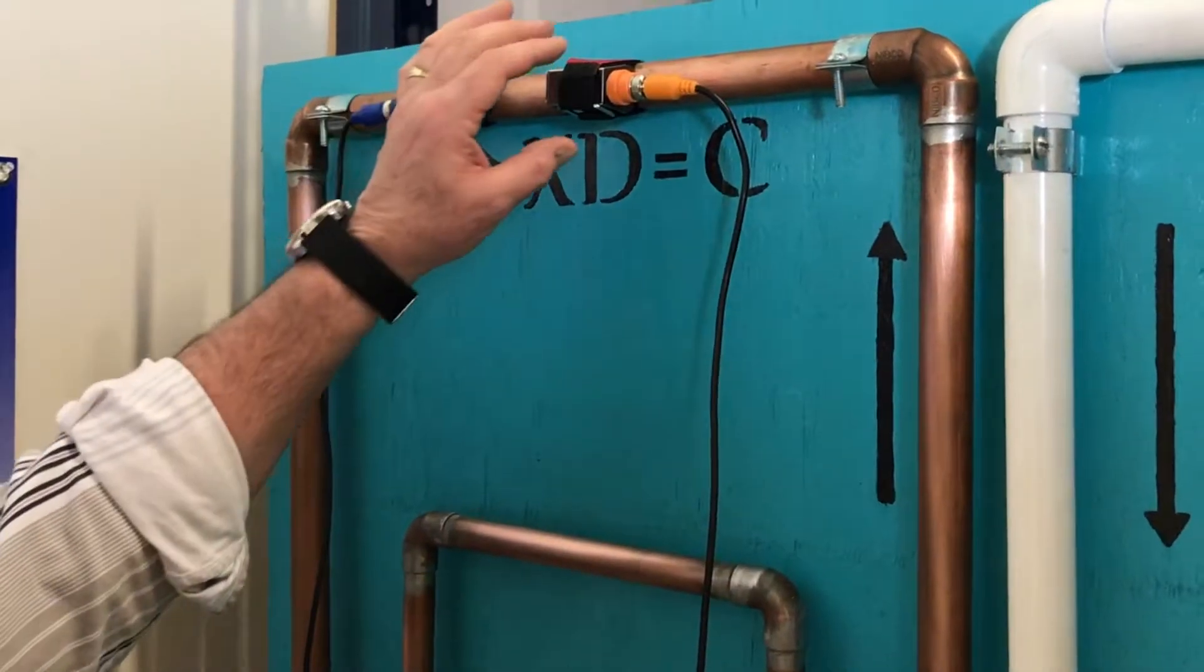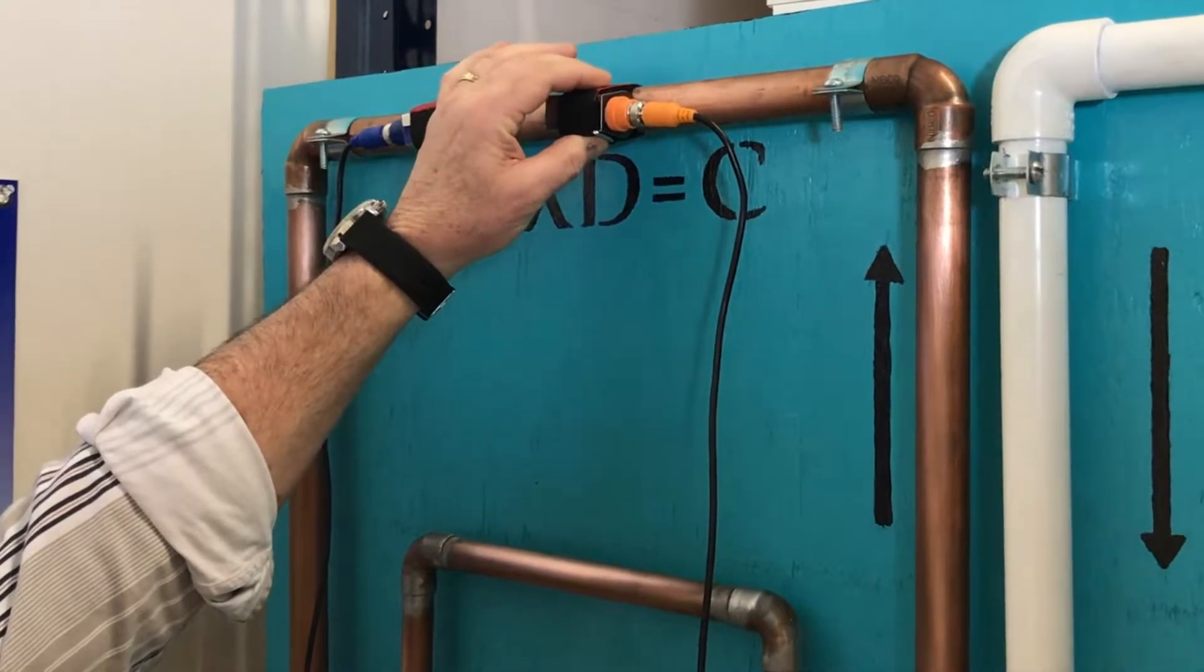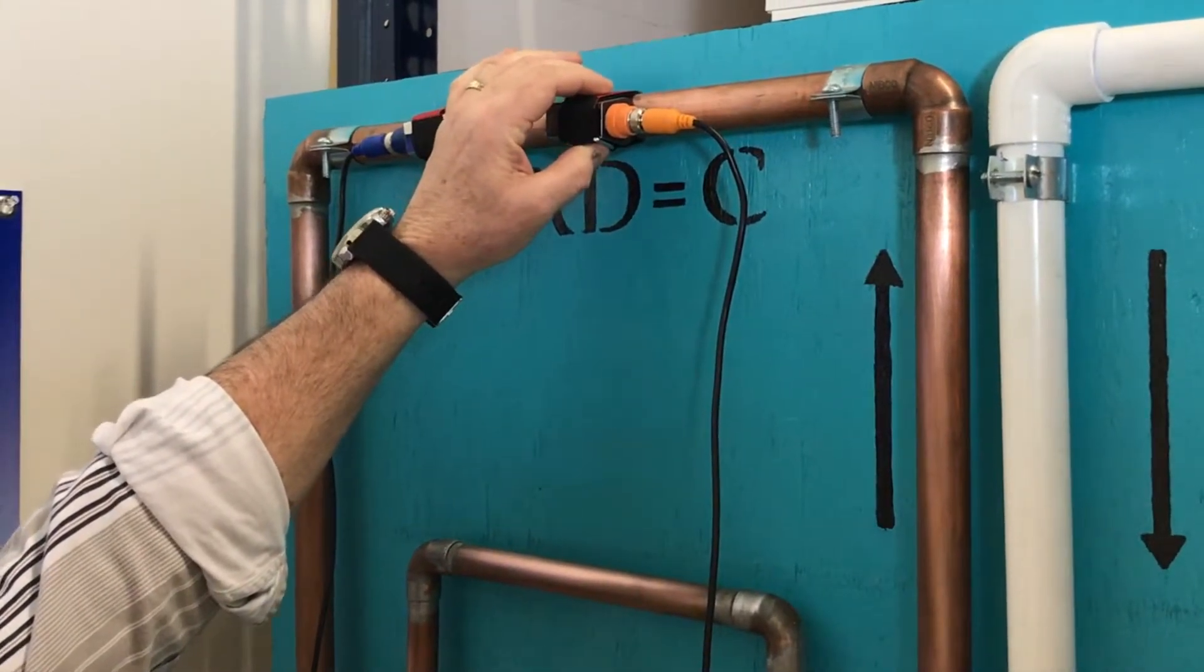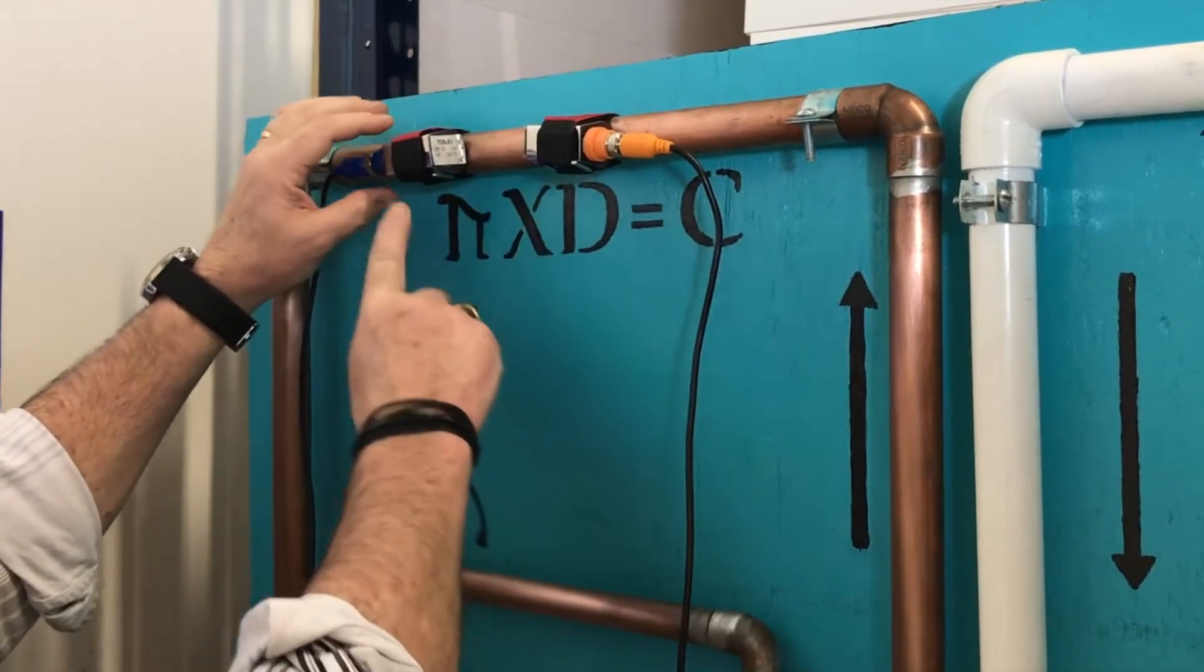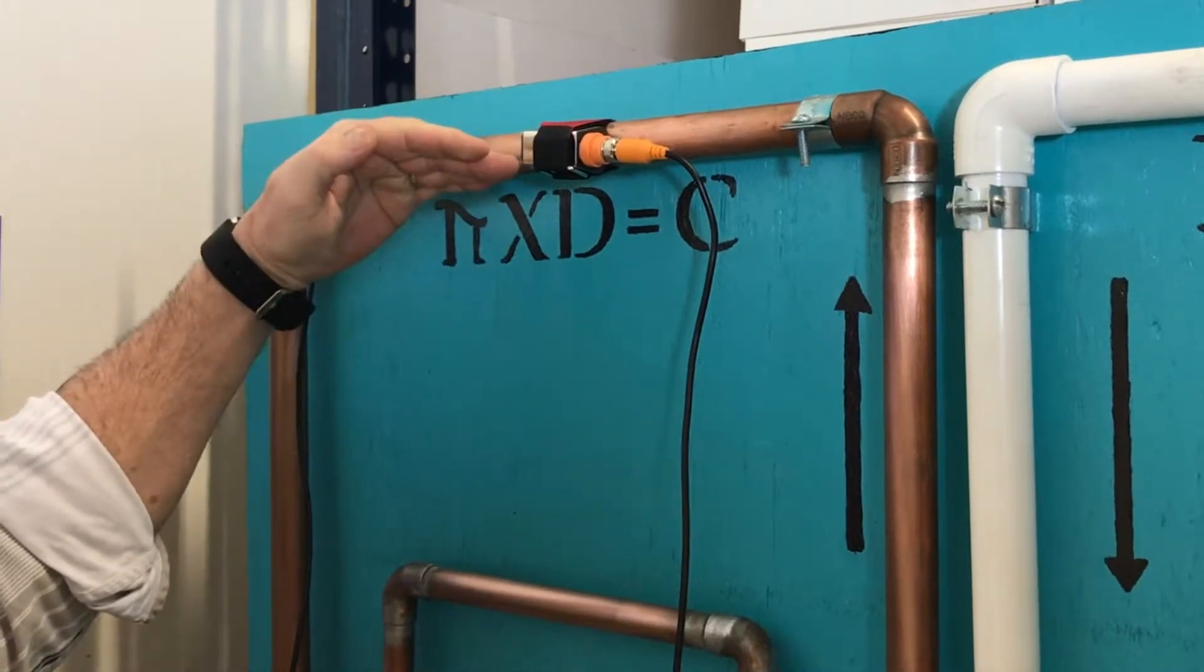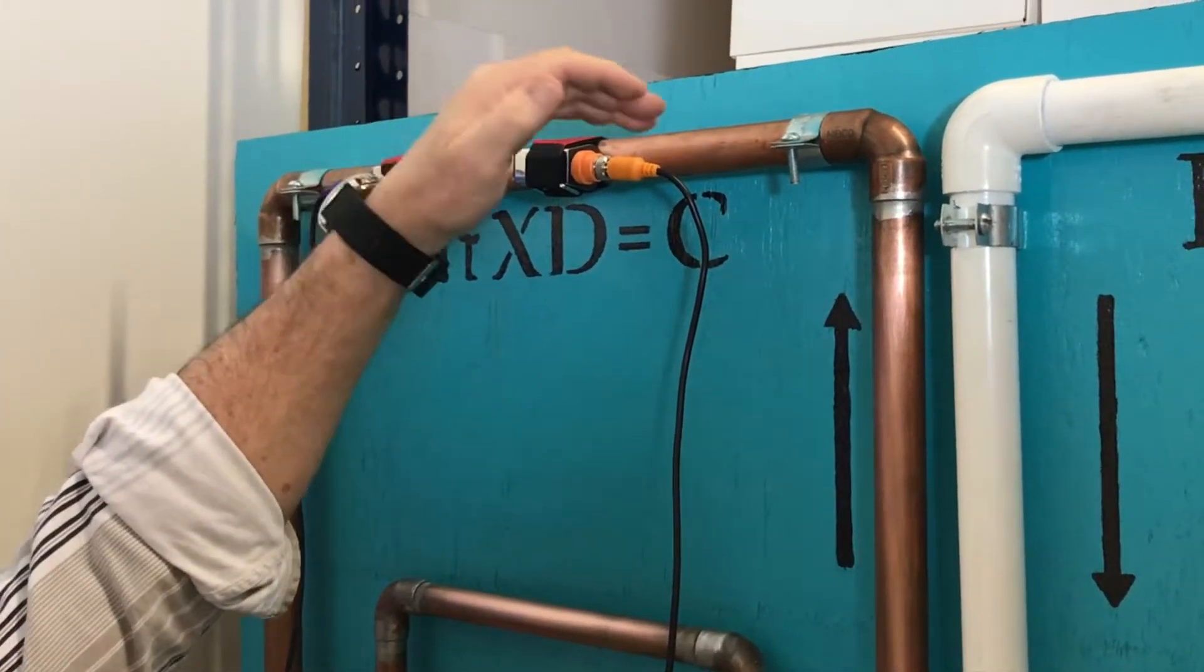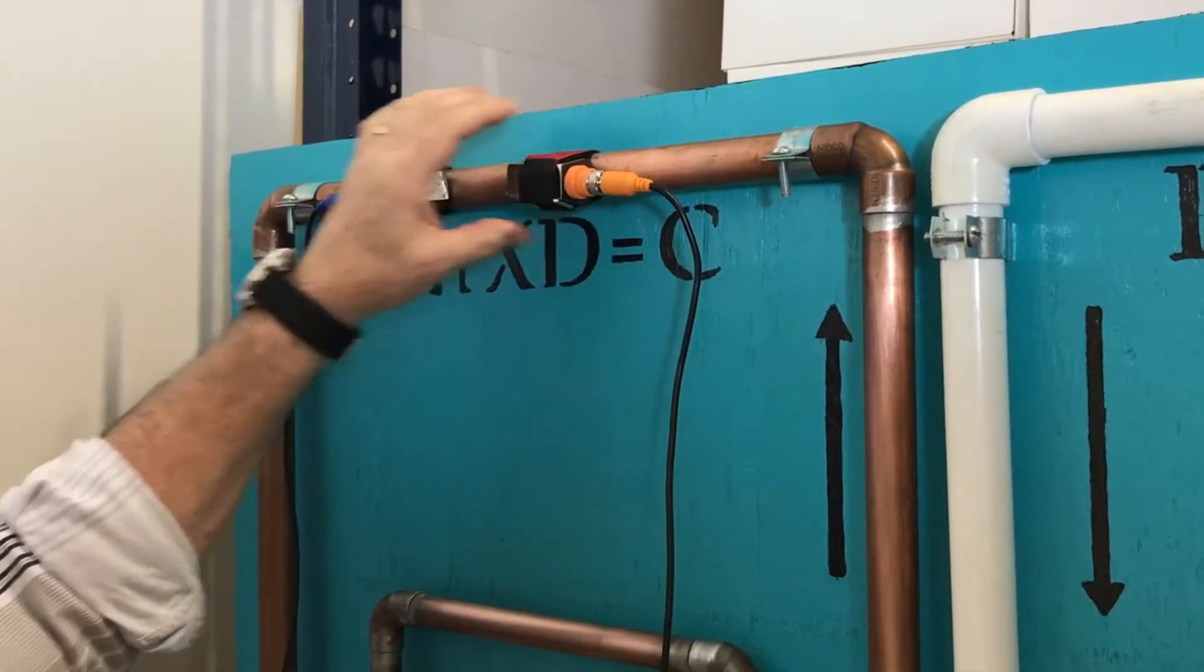When putting the sensors on, it's important to put the upflow sensor on. It's color-coded orange. This has to go in the direction of the liquid flowing through the pipe on the upflow. The blue one is the downflow sensor. Make sure they're at 90 degrees in case of turbulence or air bubbles in the top of the pipe. It will not affect the reading on your meter.